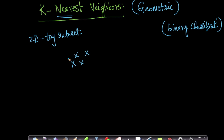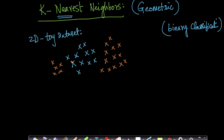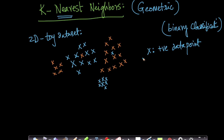Imagine I have two types of points: blue crosses representing one class and red crosses representing another class. These are two classes of points in a 2D space — this is my x-axis and this is my y-axis. Each blue cross represents a positive class data point and each red cross represents a negative class data point. Anything we can understand in 2D, we can scale it to higher dimensions using linear algebra.